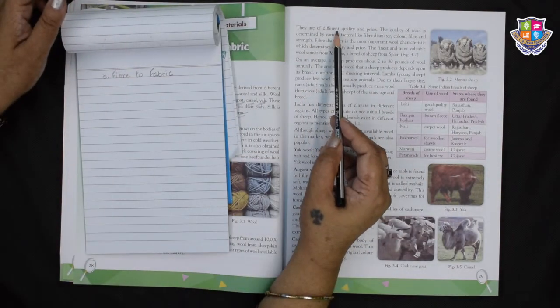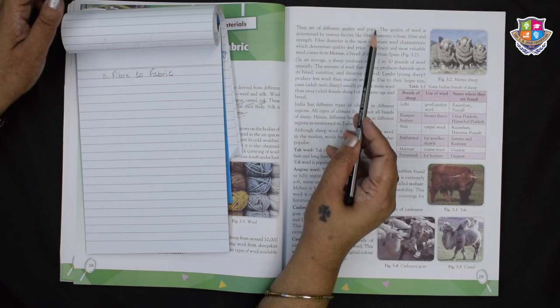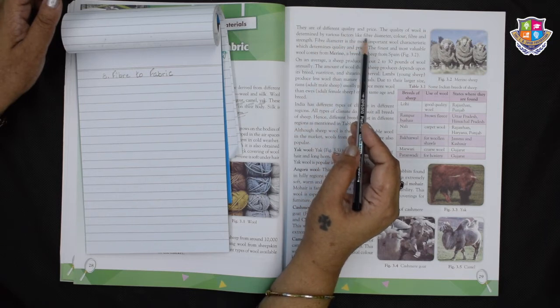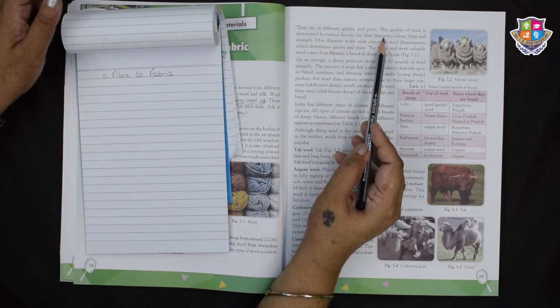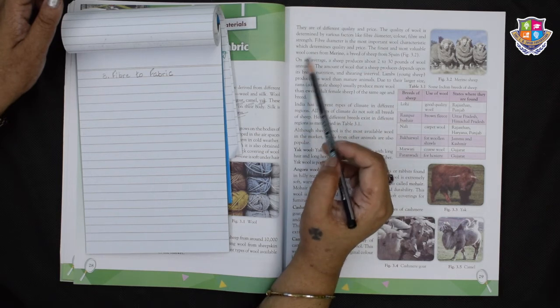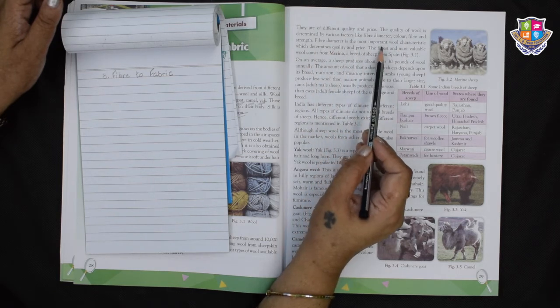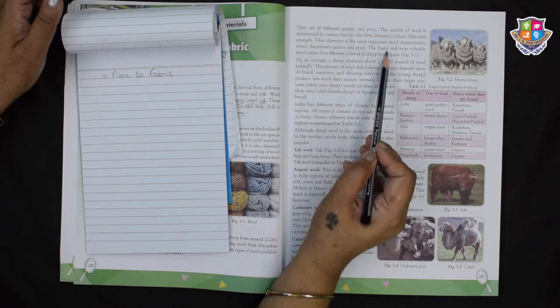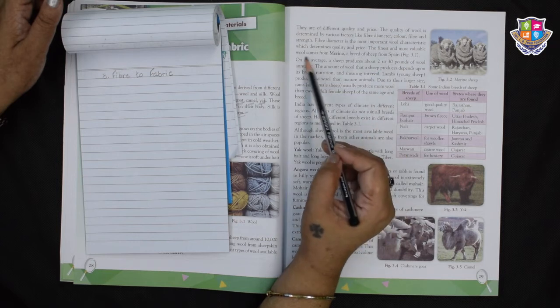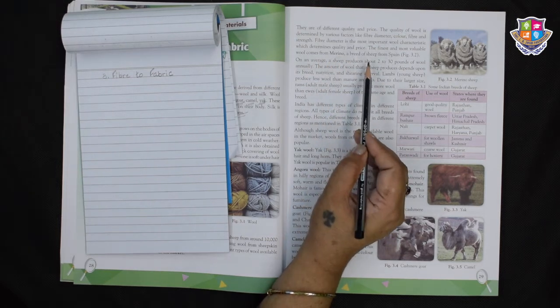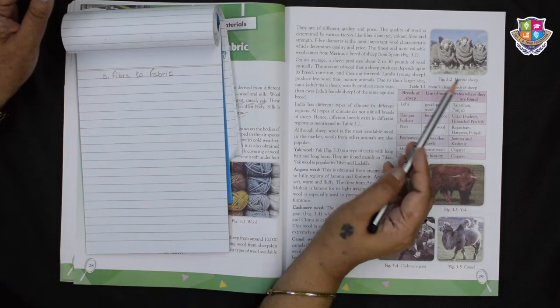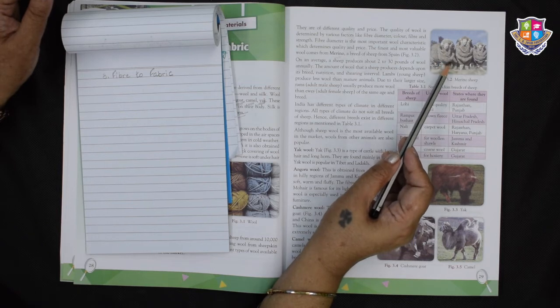There are different types of wool available in the market. They are of different quality and price. The quality of wool is determined by various factors like fibre diameter, colour, and fibre strength. Fibre diameter is the most important wool characteristic which determines quality and price. The finest and the most valuable wool comes from the merino, a breed of sheep from Spain.